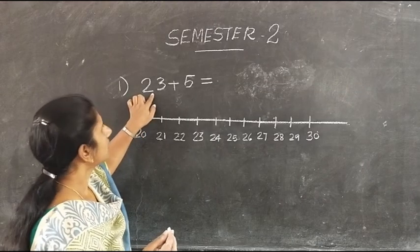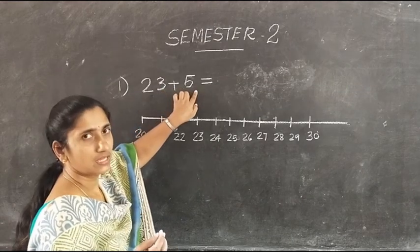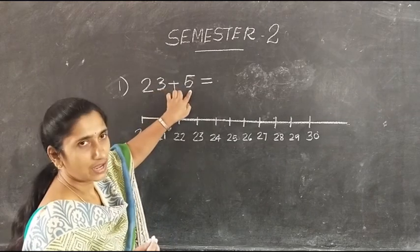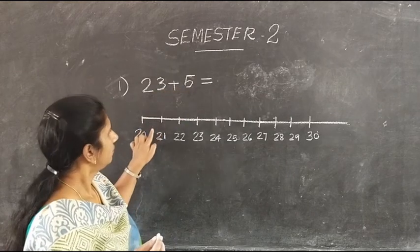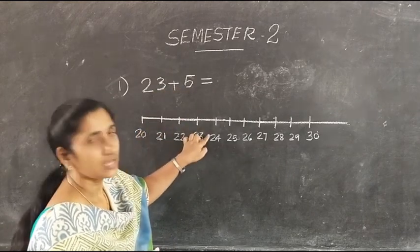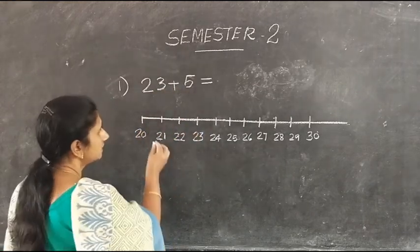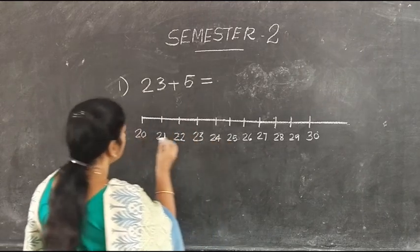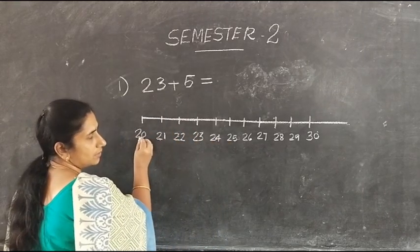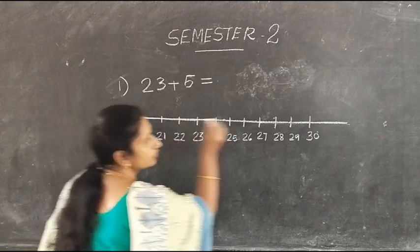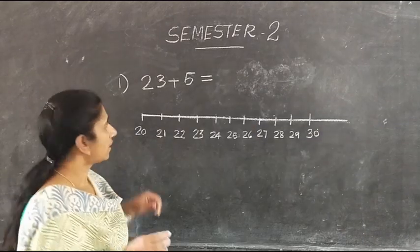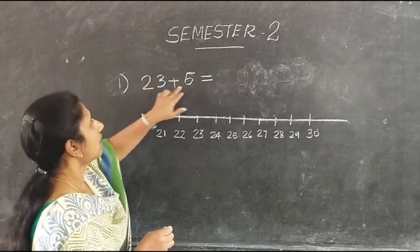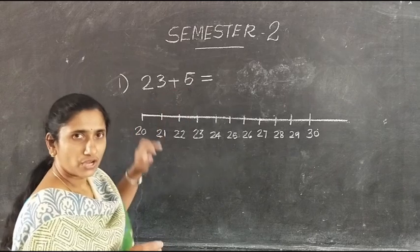Our first question is 23 plus 5. Here we have to add 23 and 5 with the help of a number line. This is a number line starting from numbers 20 to 30. Here we have to add 23 and 5.